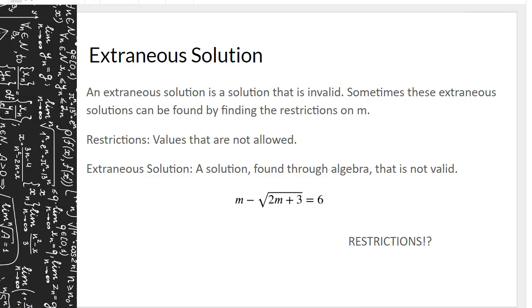Sometimes you'll have an extraneous solution — an invalid solution. These can be found by checking restrictions, or they're found when plugging the value back into the original equation. Restrictions are values that are not allowed. An extraneous solution is one found through algebra but not necessarily valid.